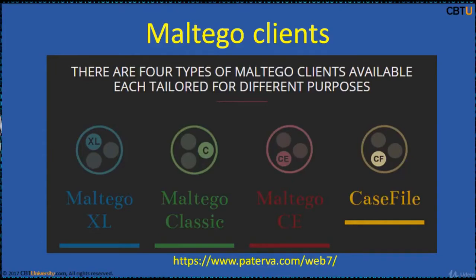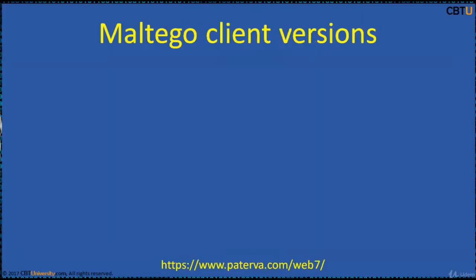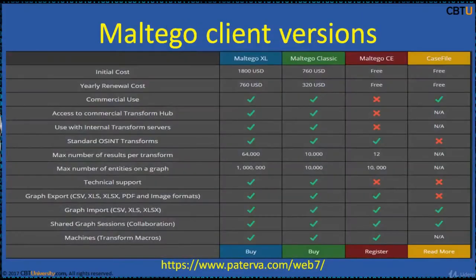There are four types of Maltego clients available: Excel, Classic, CE, and Casefile. The difference between these versions is the number of entities that can be returned from a single transform and the maximum number of entities that can be on a single graph. The Casefile is used by analysts using offline data who do not need access to standard transforms within Maltego.